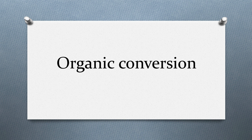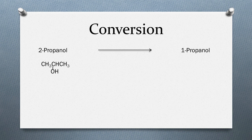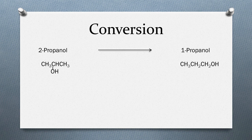In this organic conversion, we are going to convert 2-propanol to 1-propanol. The formulas for the two products are written here. 2-propanol is a secondary alcohol and 1-propanol is a primary alcohol, so the objective is to convert a secondary alcohol to a primary alcohol. As usual, we will start from the products and see how we can change the reactants to the products.